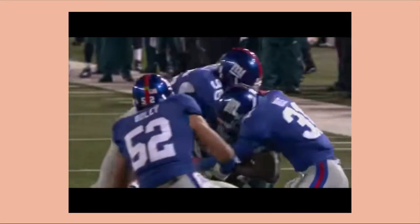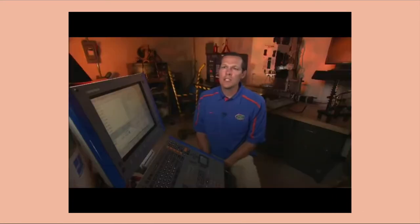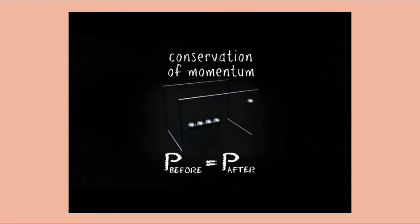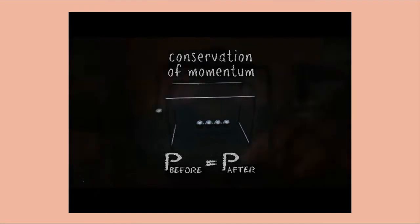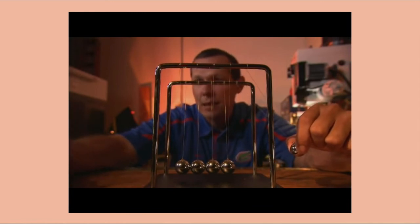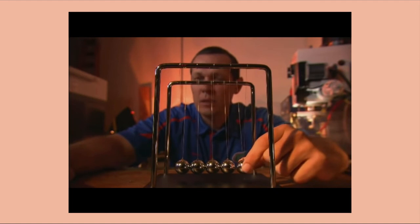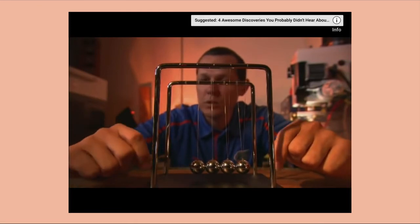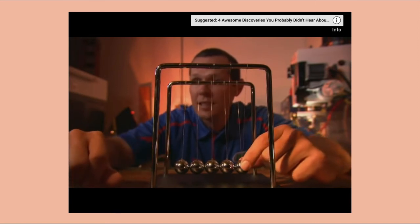This relationship is called conservation of momentum. The law states that p before equals p after. This can be illustrated with a Newton's cradle: an initial sphere is displaced and released with some momentum — mass times velocity. When it impacts the next sphere, that momentum is transferred through the middle three spheres and passed to the final sphere, which moves away with the same velocity.